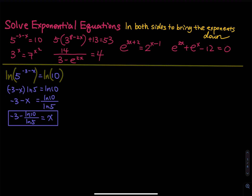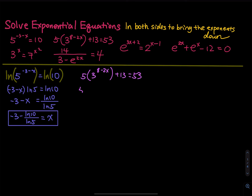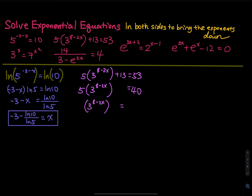Moving on to the next equation: 5 times 3 raised to the 8 minus 2x plus 13 equals to 53. Don't just ln both sides right now. Before we ln both sides, I want to isolate the exponential term alone. So first we subtract both sides by 13: 5 times 3^(8-2x) equals to 40. Then divide both sides by 5. So 3^(8-2x) equals to 8.